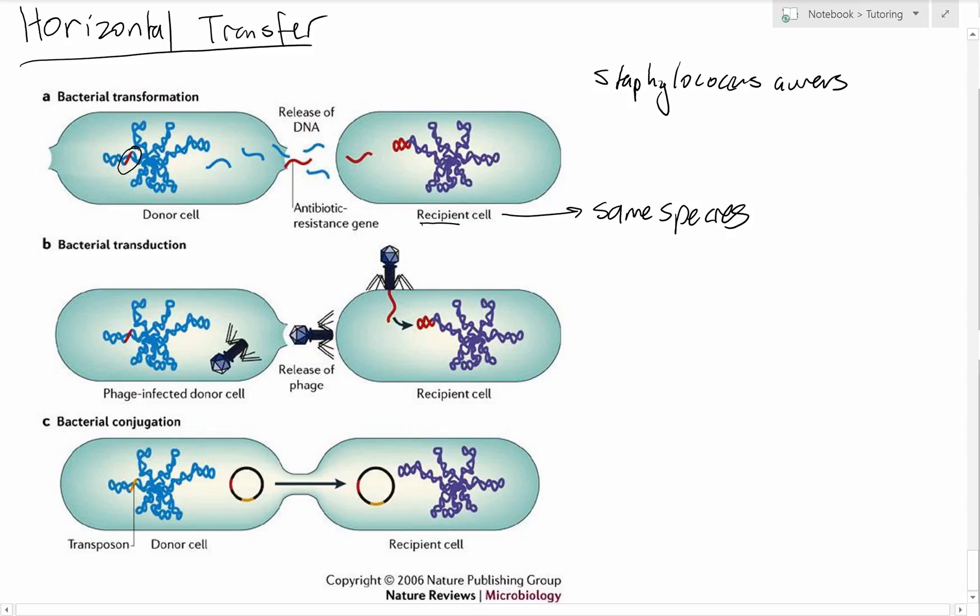Transduction is bacteriophage mediated. What it involves is a lytic phage, one that's going to kill the cell. It uptakes bacterial DNA instead of picking up its own genome which is replicating within this bacteria. Instead of picking up its own DNA, it picks up the bacterial DNA, and then the donor DNA is then incorporated into the host genome.